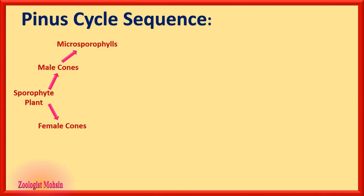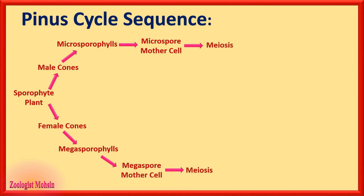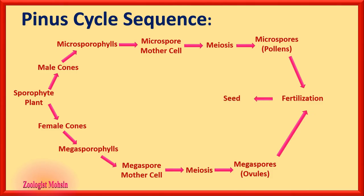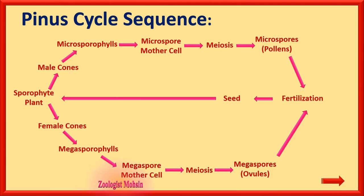Here is the sequence of the Pinus life cycle for easy understanding: the sporophyte plant body produces two kinds of cones — male cones with microsporophylls and female cones with megasporophylls. Microsporophylls have microspore mother cells and megasporophylls have megaspore mother cells, both diploid. These undergo meiosis to produce haploid microspores and megaspores. Microspores (pollens) and megaspores (ovules) fertilize to form a zygote, which results in a seed, which germinates to form the sporophyte. This sequence is asked in MCQs.